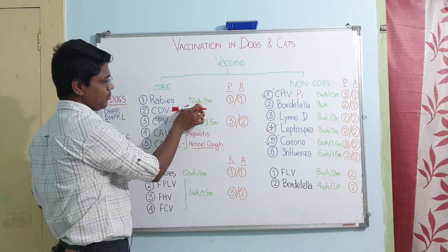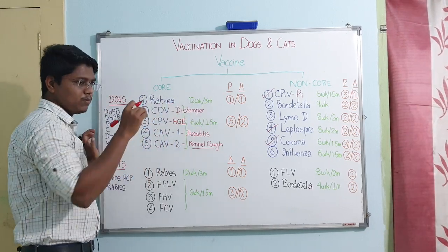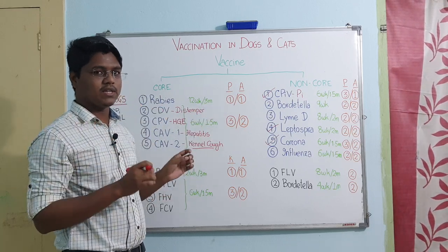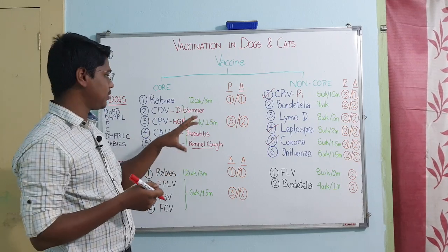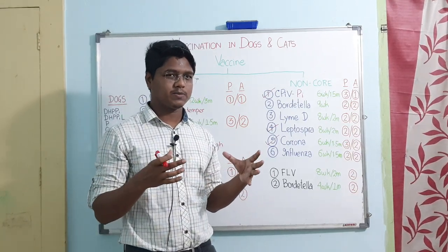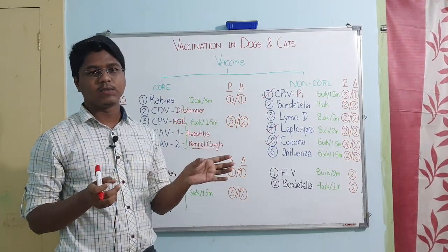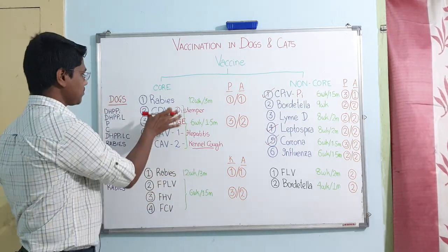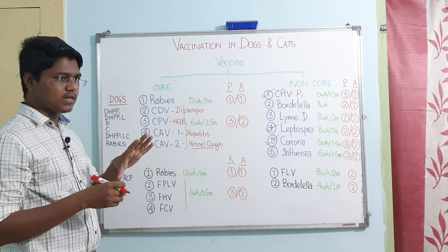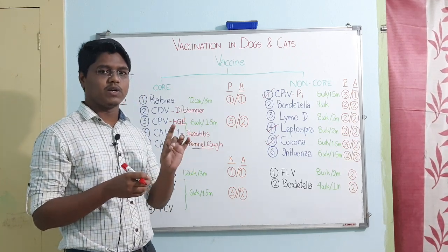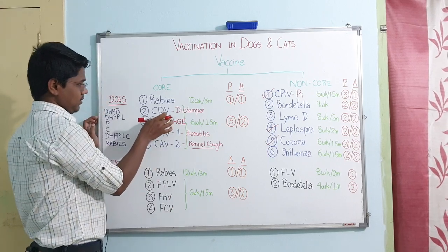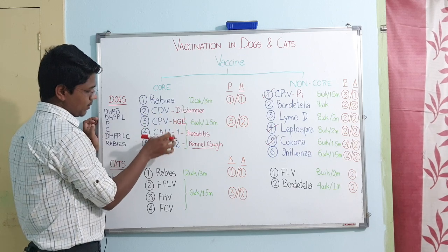For rabies vaccine, some articles say the primary vaccination booster is given after one year and then every three years. Some articles also suggest only annual vaccination. Many veterinarians and medicine shops give rabies vaccine in multiple doses at three or six month intervals — this is not necessary. Modern vaccines are very advanced; a single dose is sufficient. Some vaccines claim a single shot provides immunity for up to three years. Consult your veterinarian and do not trust medicine shops.